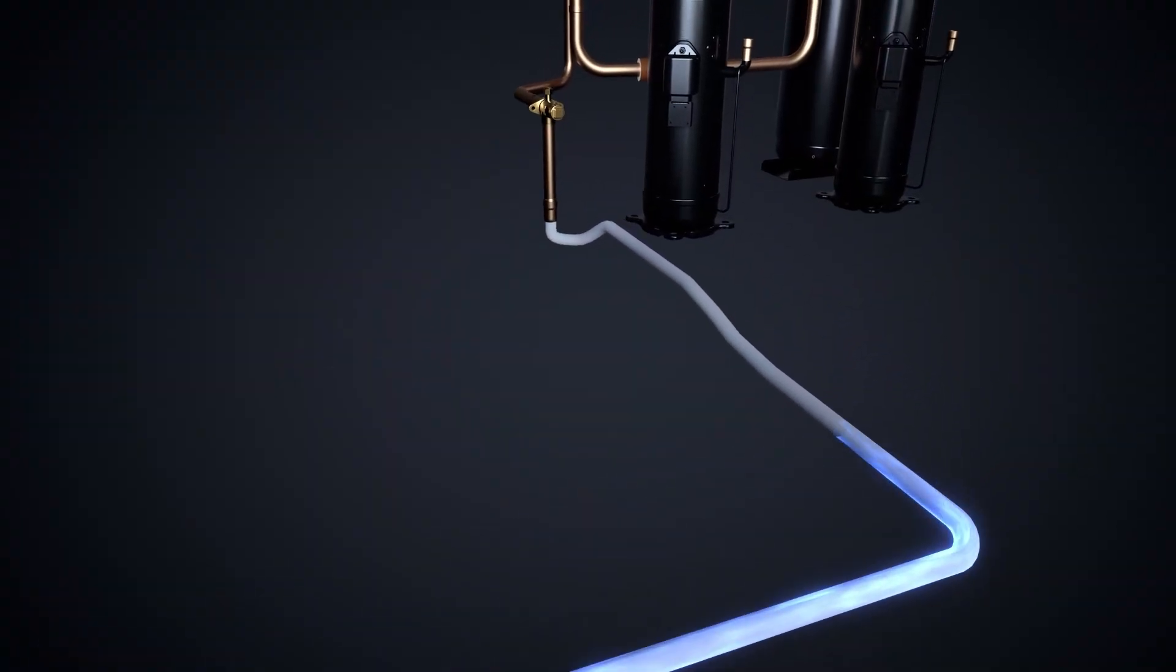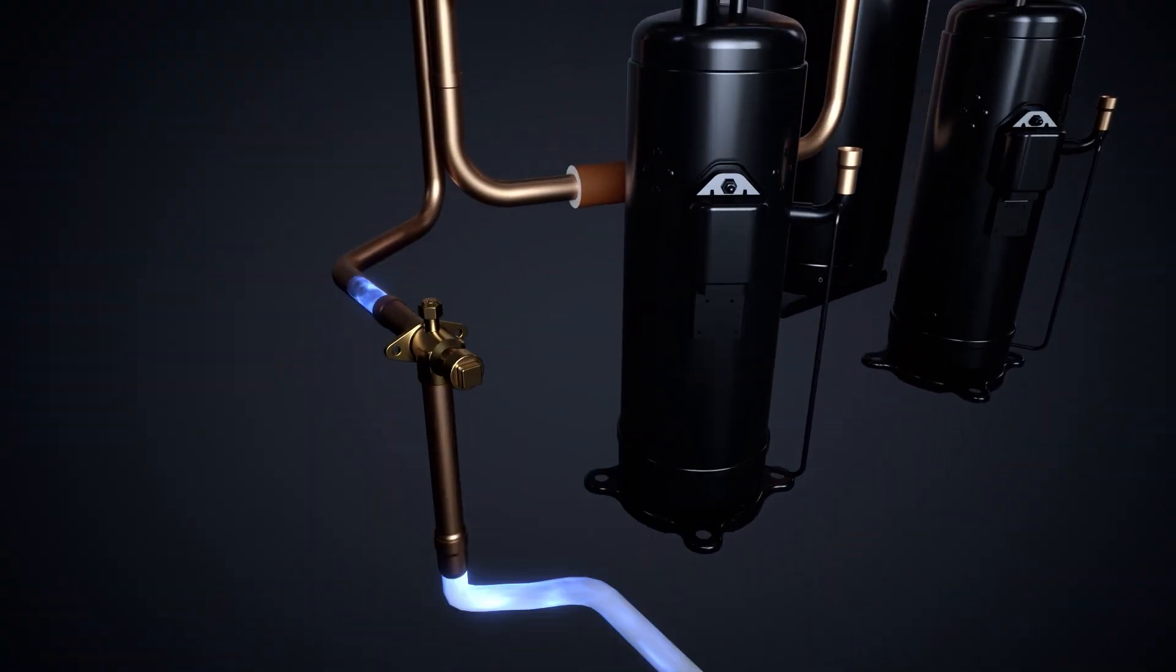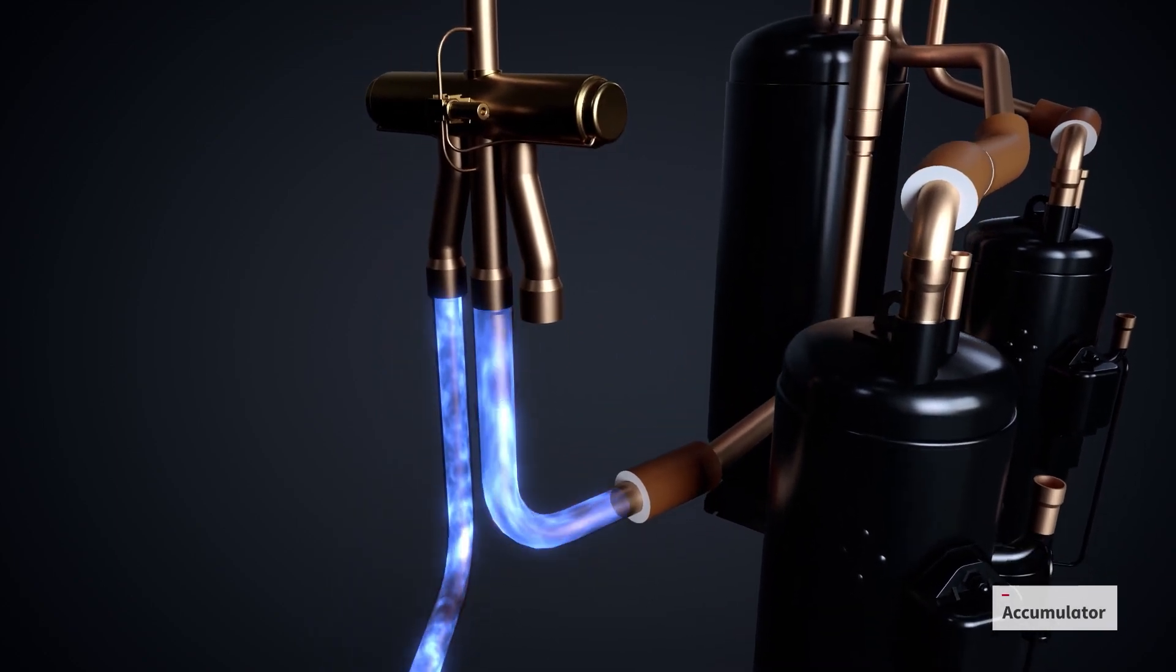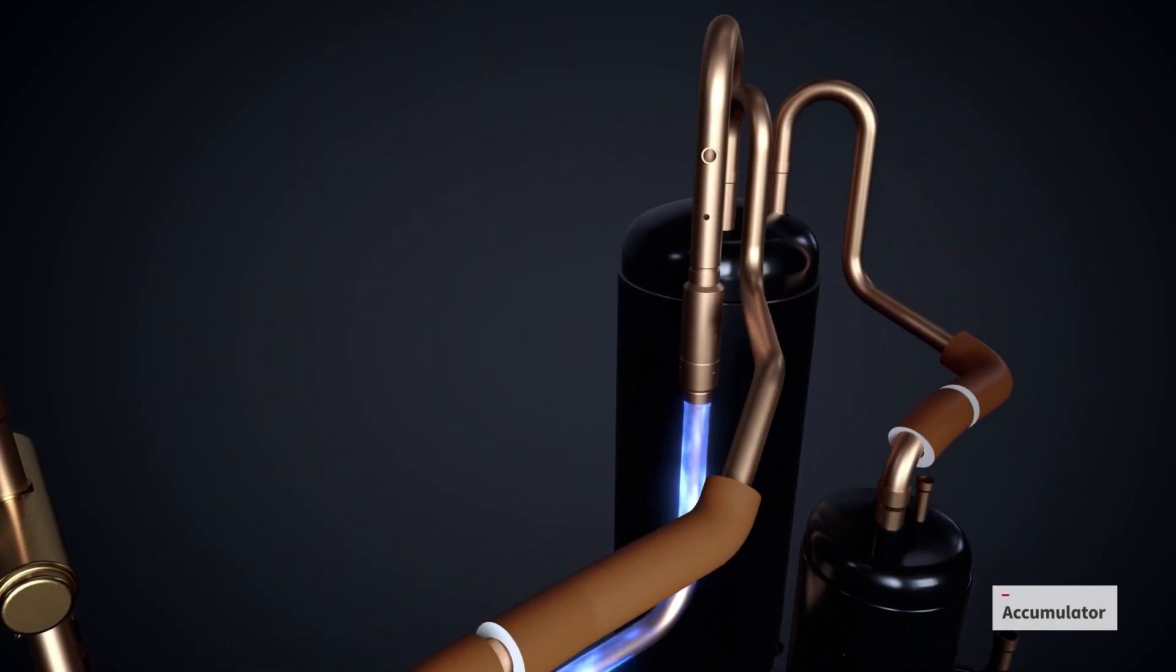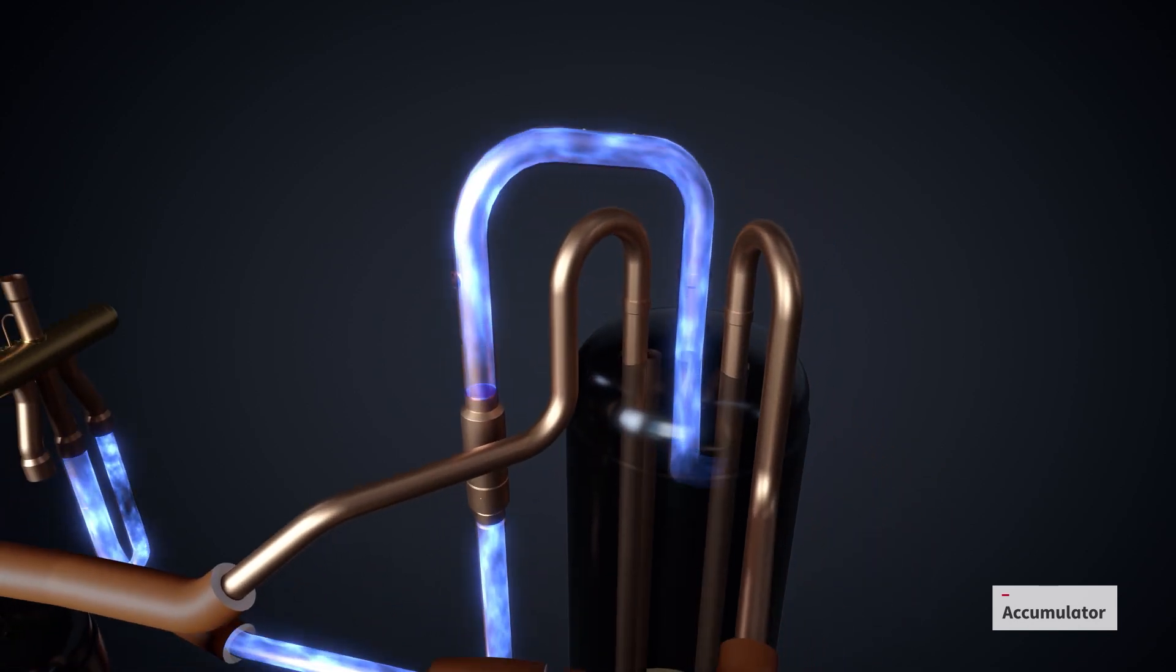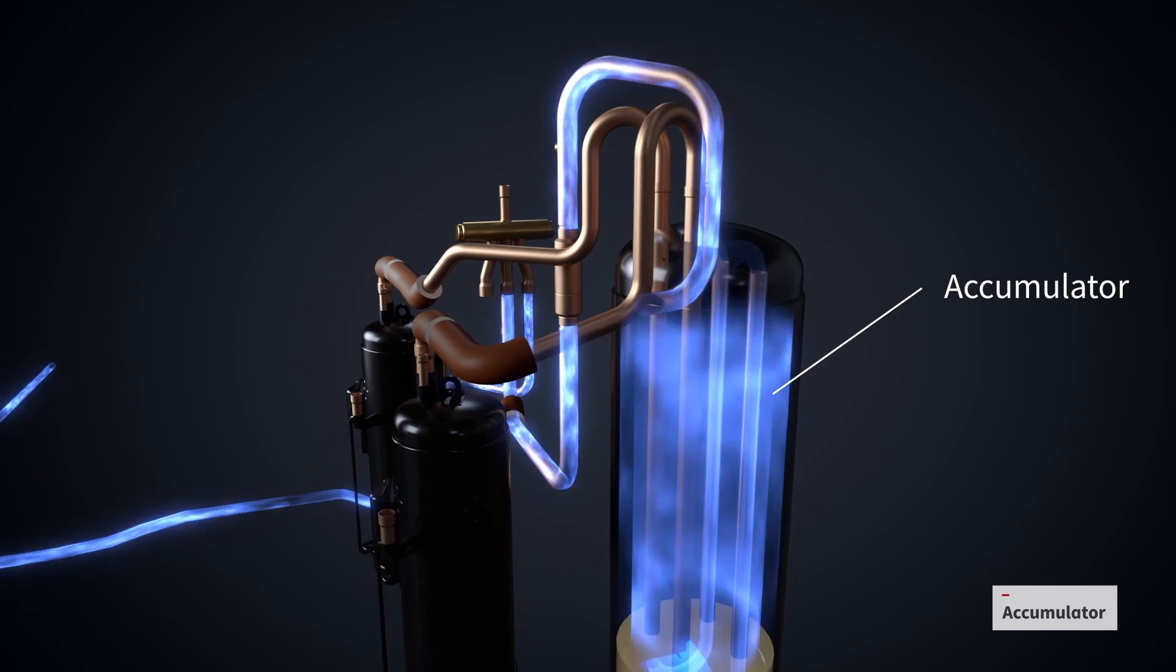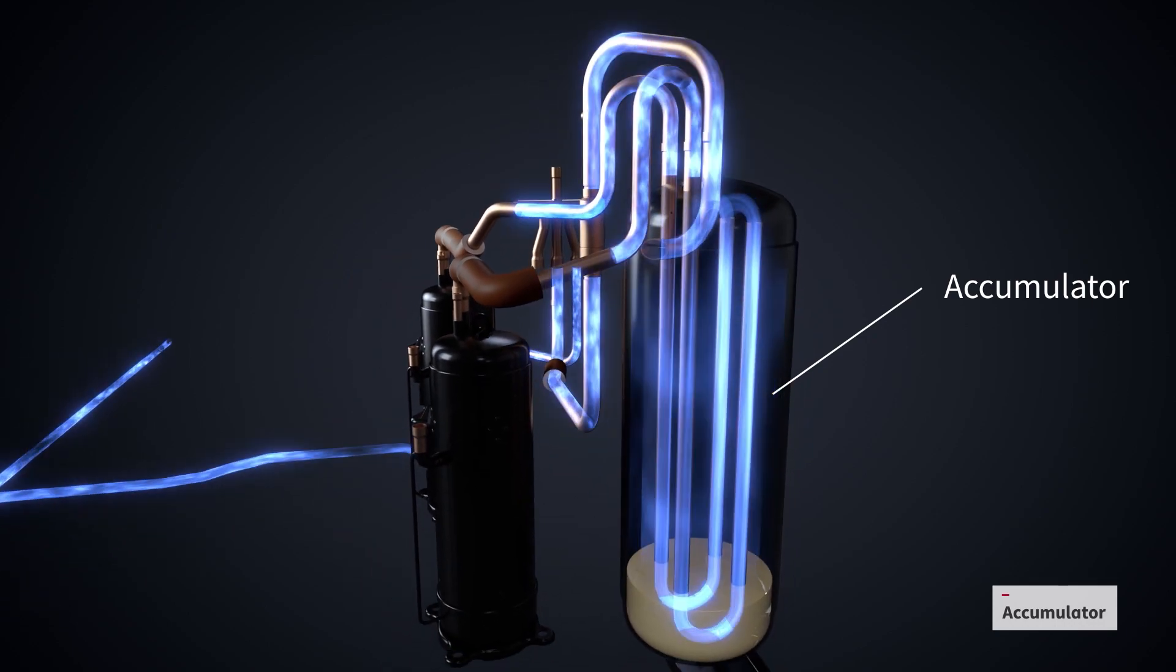After the refrigerant flows through the indoor units, it goes back to a large size accumulator. A key part of the safety operation as it separates and stores the refrigerant in both liquid and gas states. Finally, the refrigerant goes back to the scroll compressor, which begins the cycle again.